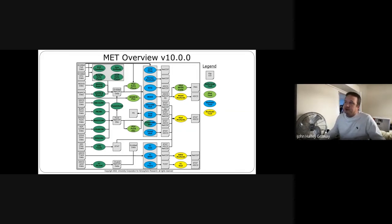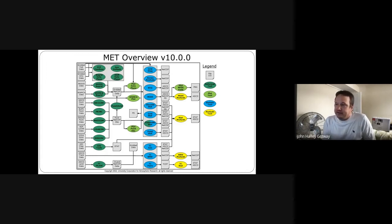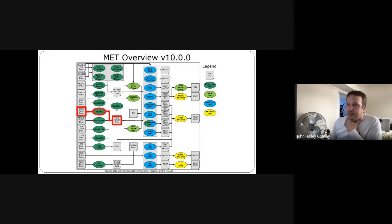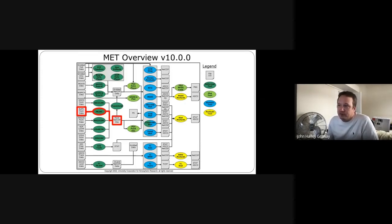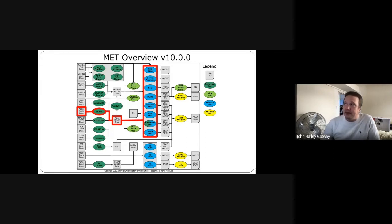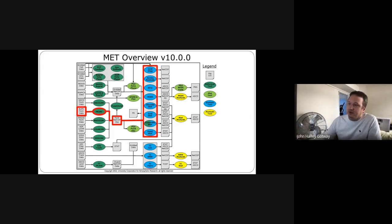Here is the overview of MET version 10.0.0, the version we're using for this training series. Each one of these ovals is one of the tools within MET. Today I'm talking about the buffer point data. The gray boxes on the left are data sources, data files. We're reading buffer point data into the PB2NC tool and generating a point NetCDF output file. We do that so we can input that NetCDF output file into the statistics tools in MET — specifically point stat and ensemble stat, which are two tools that process point observations. The plot point obs tool shown to the bottom right is another tool that can process the point observation data to visualize it.